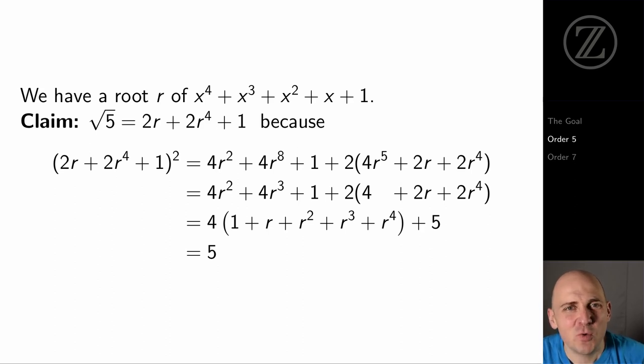But 1 plus r plus r squared plus r cubed plus r to the 4th, that's the quantity that's 0 because r is a root of that polynomial. I mean, that's what I picked r to be, this element of order 5. So what this shows me is that that original thing that I squared, 2r plus 2r to the 4th plus 1 squared, that's 5.